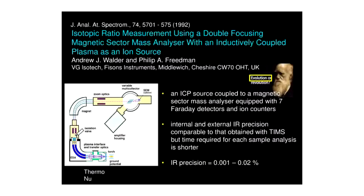Further improvements in isotope ratio precision were achieved by combining the sector field device with a TIMS-type multi-collector geometry. Multiple Faraday detectors or electron multipliers can simultaneously measure several isotopes. With Thermo instruments, typically seven can be measured at a time, but the new Neptune 1700 has 17 Faraday detectors, allowing 17 isotopes to be measured simultaneously. This yields isotope ratio precision on the order of 10 parts per million — a tremendous improvement.